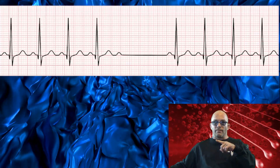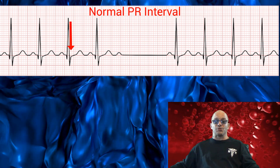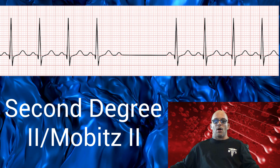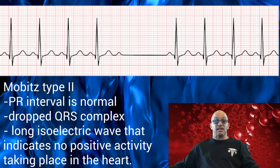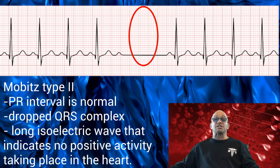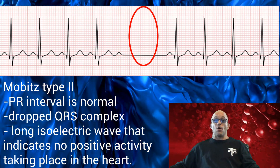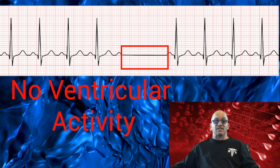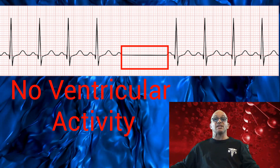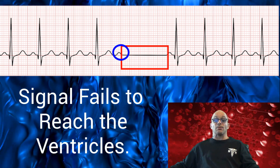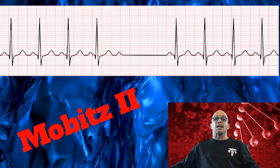Now look at this rhythm and notice the PR interval is normal, which differs from the other two rhythms. In second degree heart block Mobitz type 2, the PR interval is normal, but there is still a dropped QRS complex, which leaves a long isoelectric wave indicating no positive activity taking place in the heart. Everything as far as activity stops at the ventricular level. The P wave activity continues, but the activity does not reach the ventricles.